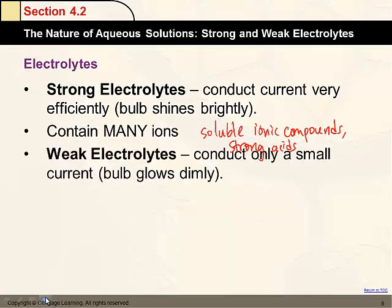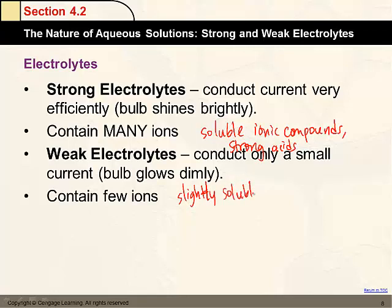Okay, next would be weak electrolytes, and they only conduct the bulb a little bit. They contain a few ions. This would be slightly soluble compounds, or slightly soluble ionic compounds. CMPDS is what I use for compounds, or weak acids.